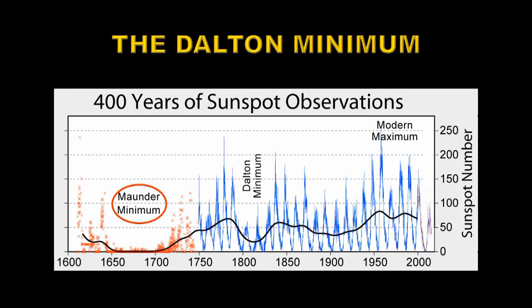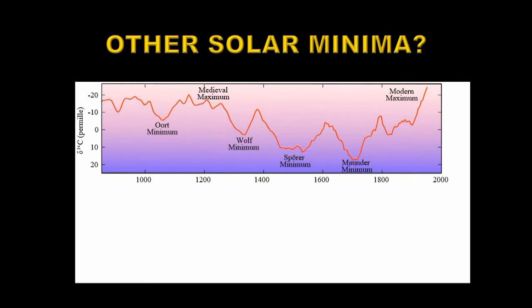People often talk about a second grand minimum, the so-called Dalton Minimum, when we had two relatively low sunspot cycles one after the other. There are other solar minima as well: the Spörer Minimum, the Wolf Minimum, and the Ort Minimum, also now identified.